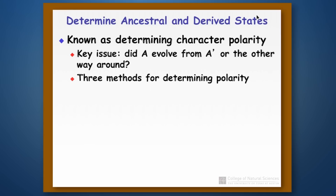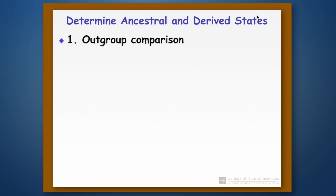There are three different methods for determining character polarity. The first one is what we call an outgroup comparison. Suppose we have three species, A, B, and C, and they have some trait that we'll call one and two. What you want to know is, is one the derived version of the trait or is two the derived version of the trait? One way to do that is to get another species that's outside of A, B, and C.